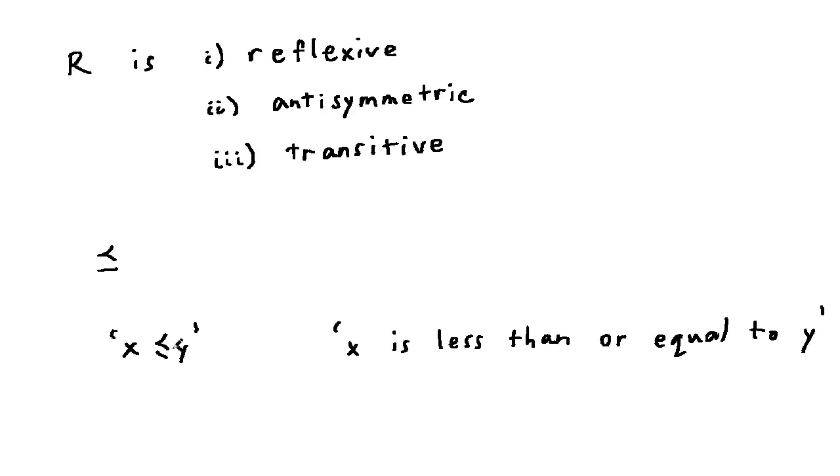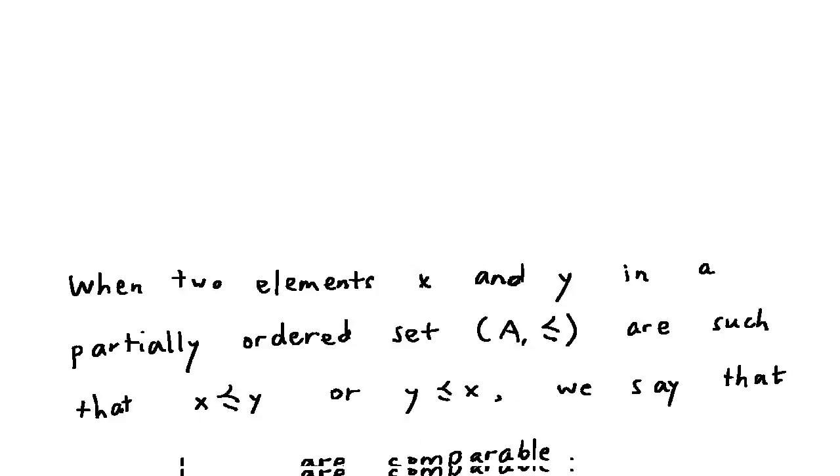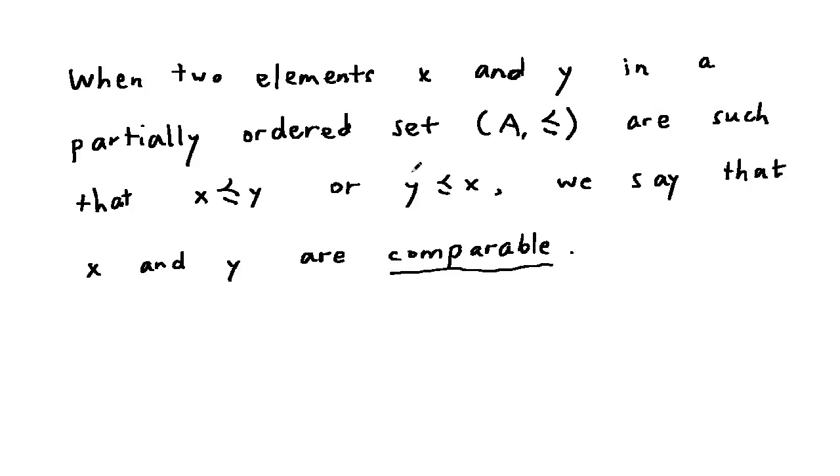We read this as x is less than or equal to y. When two elements x and y in a partially ordered set A are such that x is less than or equal to y or y is less than or equal to x, we say that x and y are comparable.